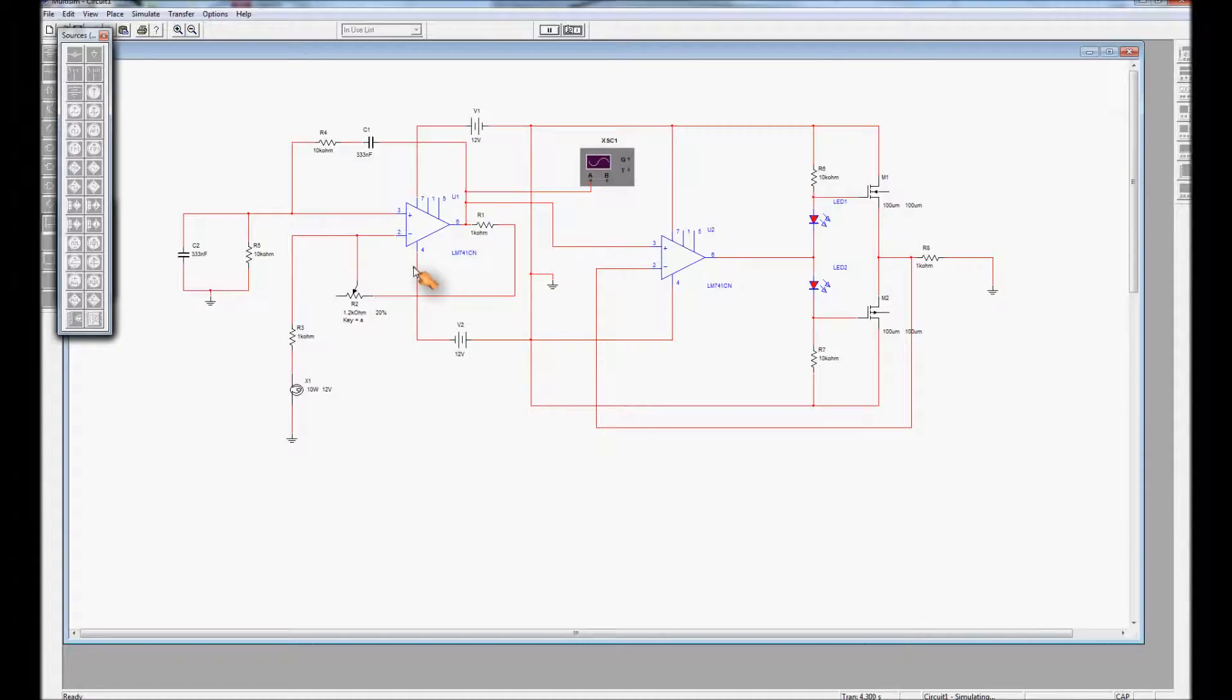To do that we use, or in this circuit I've used an oscillator, a Wien bridge oscillator, a very well known type of oscillator which produces good low frequency oscillations. And that oscillator is this circuit here that I'm circling.